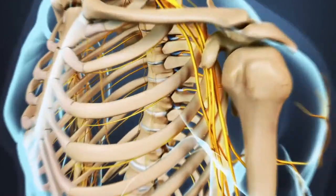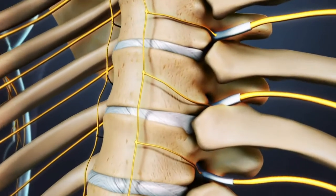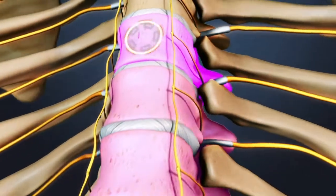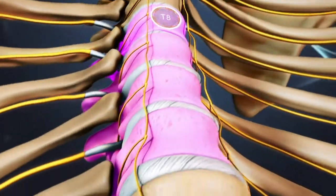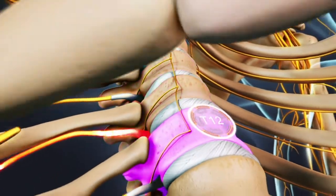Thoracic disc herniations are rare. When they do occur, they tend to occur below the 8th thoracic vertebra, or T8 level, and the lowest thoracic segment is the most common.